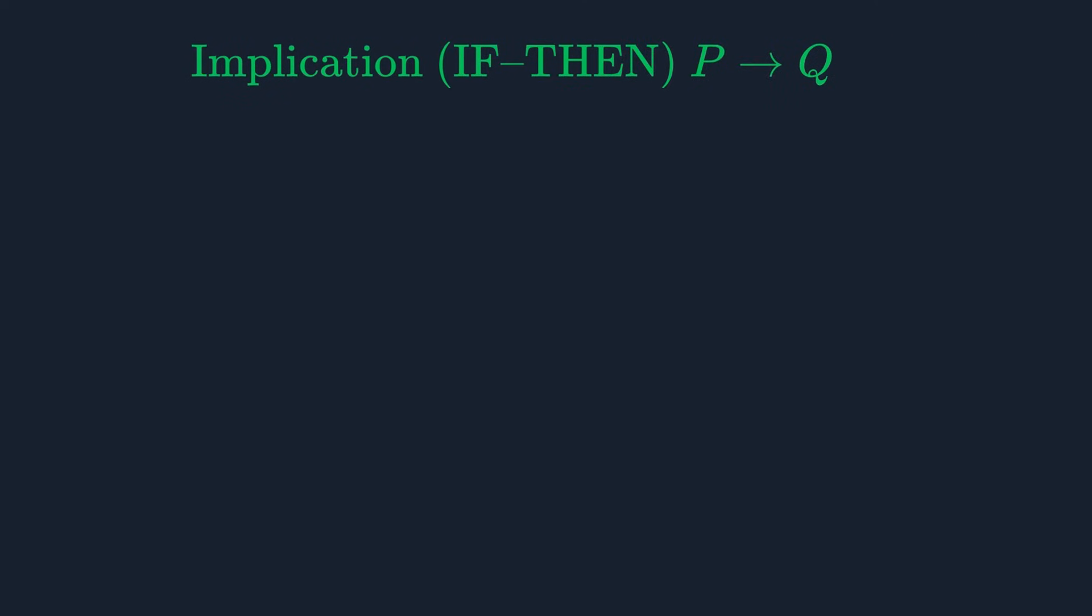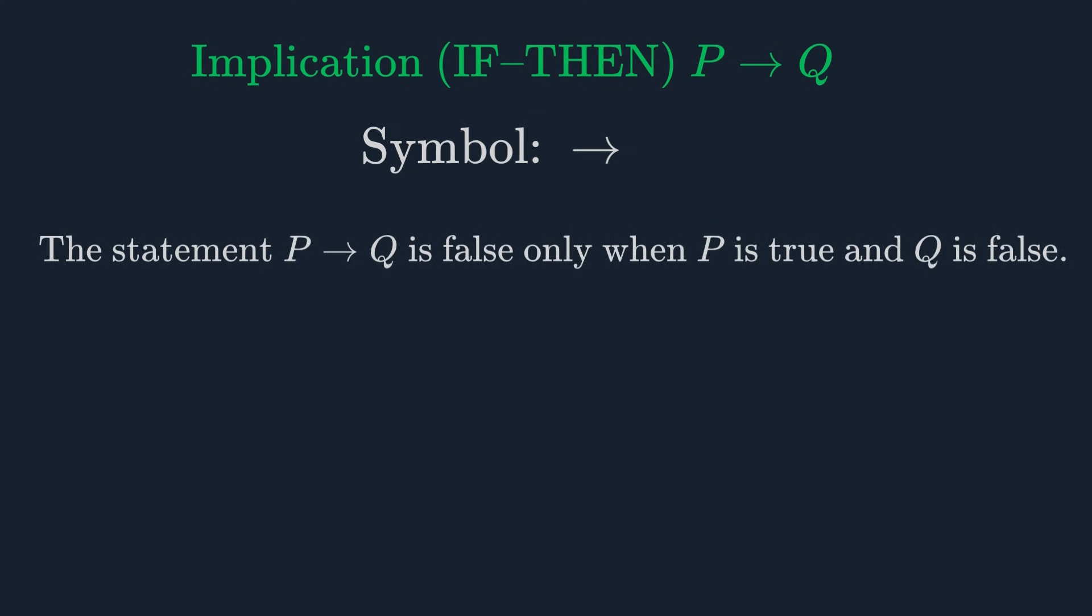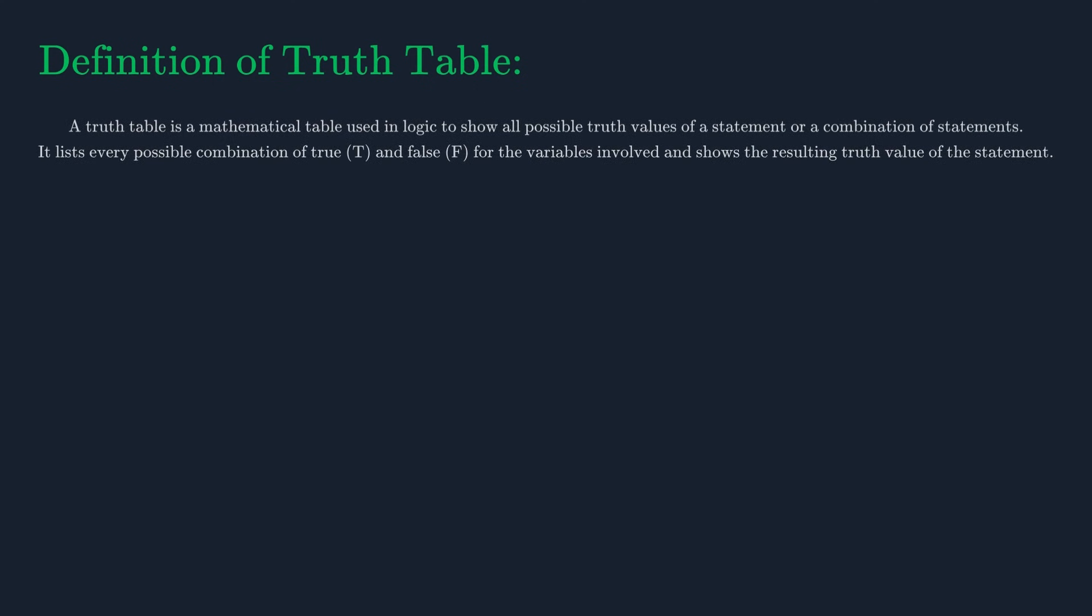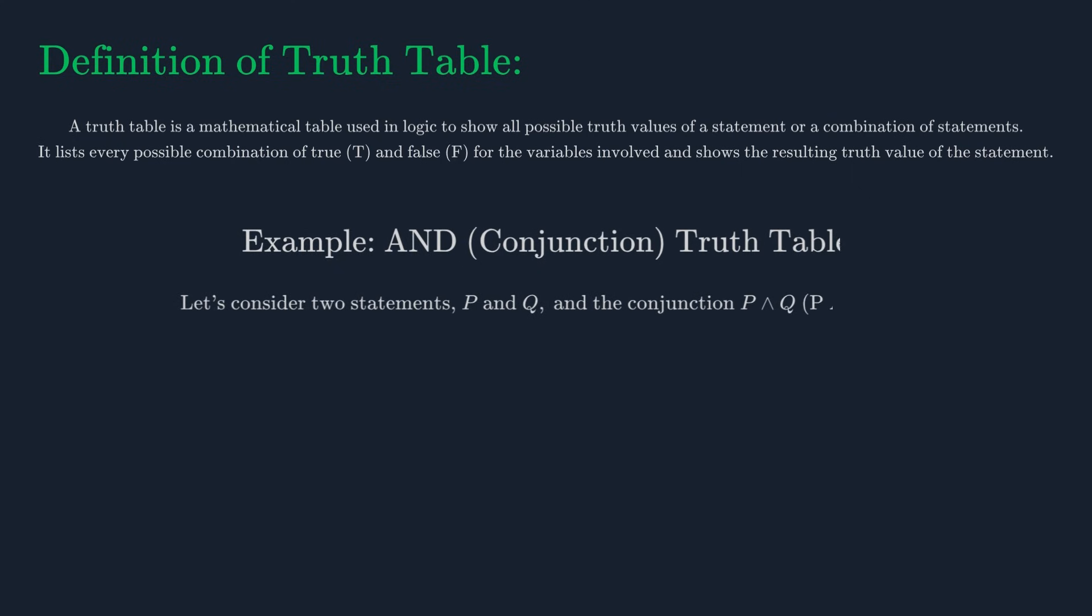Finally, we have implication, or IF-THEN, represented by an arrow. The statement IF P THEN Q is only false in one specific case: when P is true but Q is false. In all other cases it's considered true. We can summarize the truth values of these connectives using truth tables. A truth table lists all possible combinations of truth values for the simple statements and shows the resulting truth value for the complex statement.